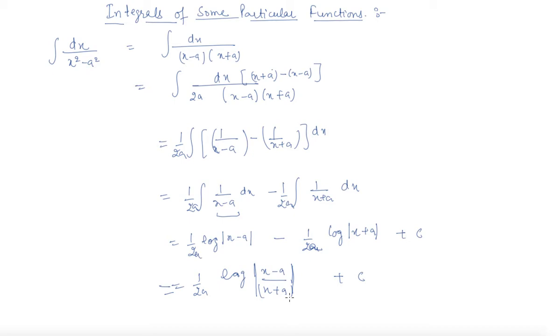Now I am telling you some more integrals for which I will not prove the result and we will use them as direct results in our further questions. The second integral of the same type is dx over a square minus x square for which it is 1 by 2a log of a plus x over a minus x plus c. I am writing down the result directly because I have proved one result and we will use all these results as a formula from now onwards.